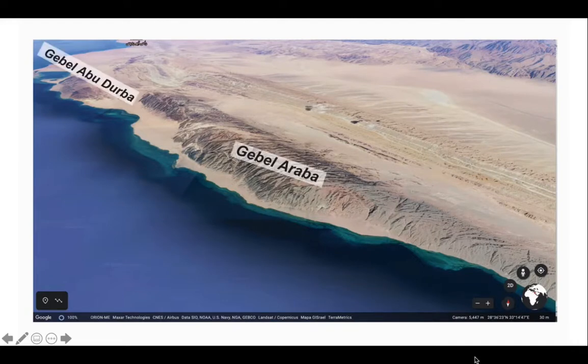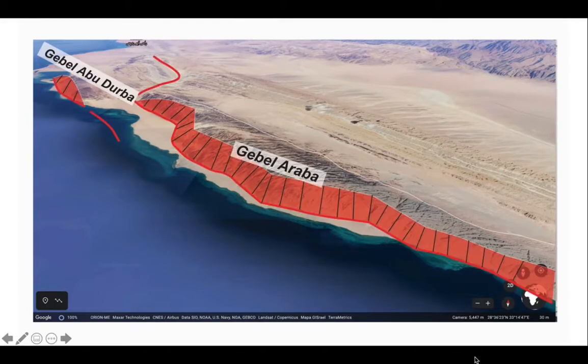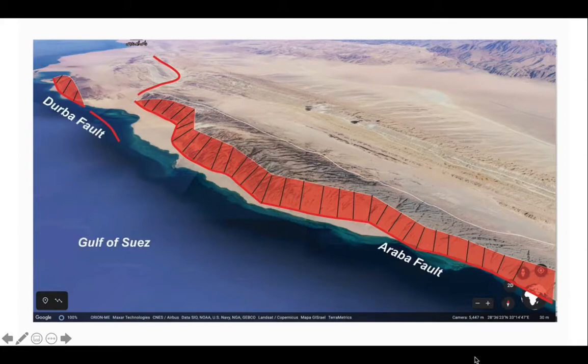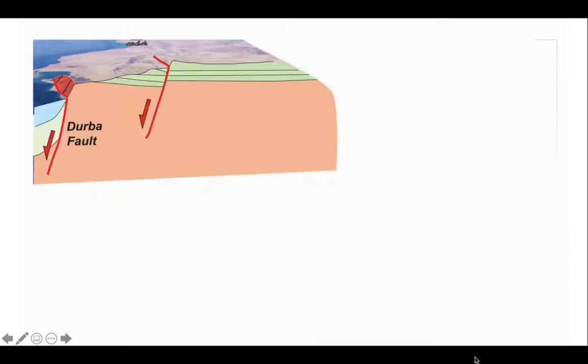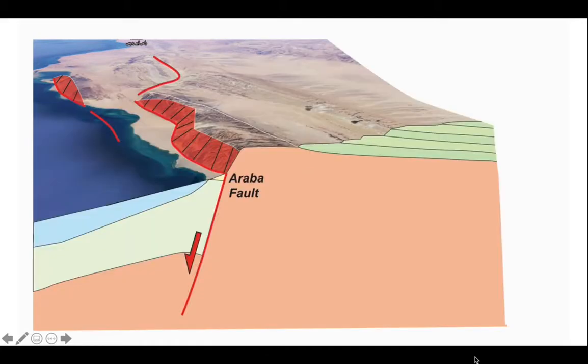And the Precambrian basement forms two jebels or ridges seen here, and they are bounded on their left or western side by fault scarps. We can give these faults some names - the Derba fault in the north and the Araba fault in the south. Let's look at a cross section in the north. Here we go - it's the Derba fault down-throwing towards the Gulf of Suez. There they have a fault further south and they offset along a relay ramp.